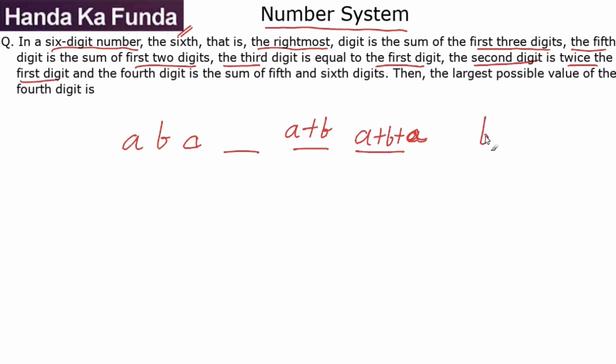The second digit is twice the first digit, which means B is equal to 2A. Which means if I rewrite my number, first digit is A, second digit is 2A, third digit is A, fourth I still do not know about.